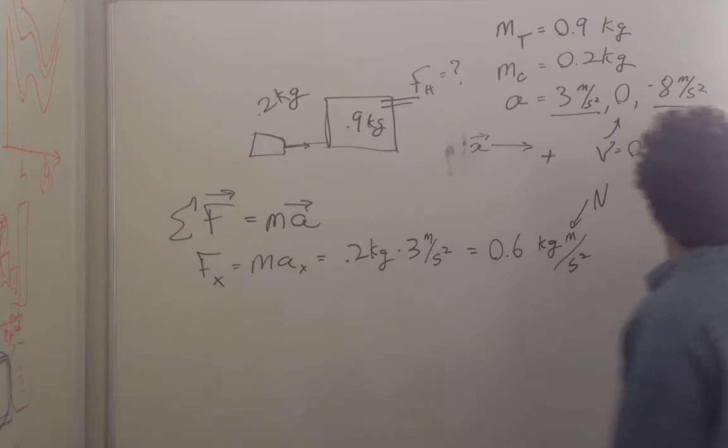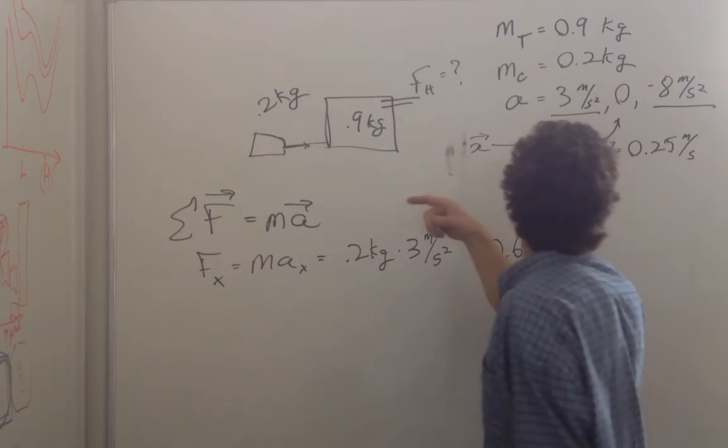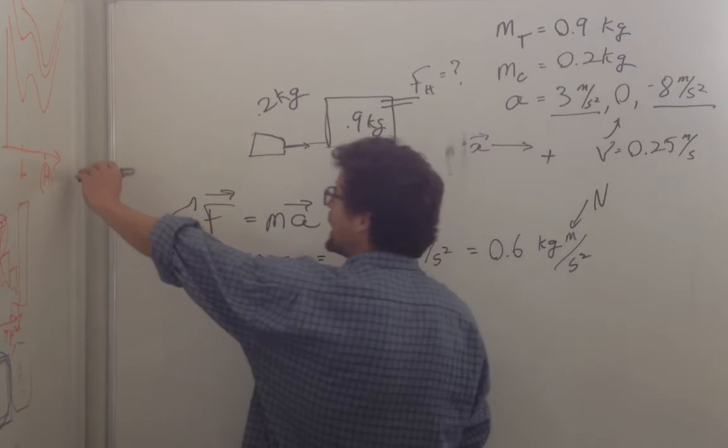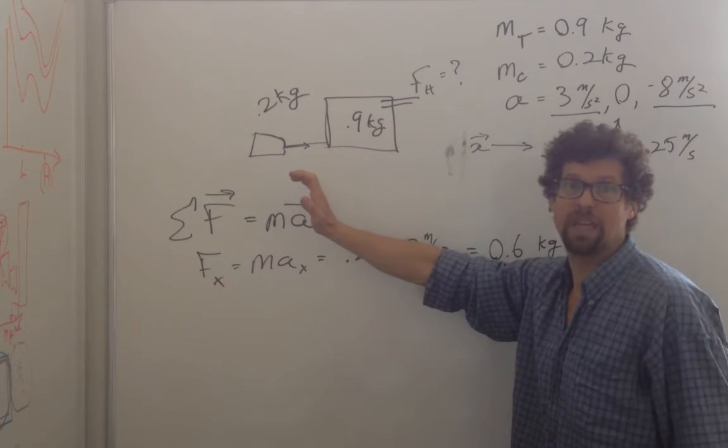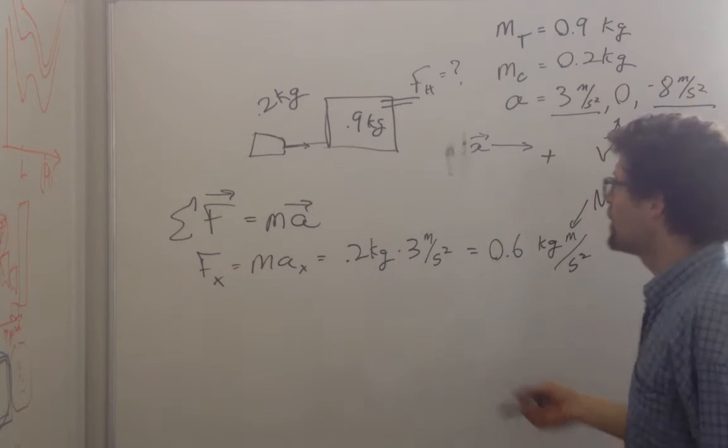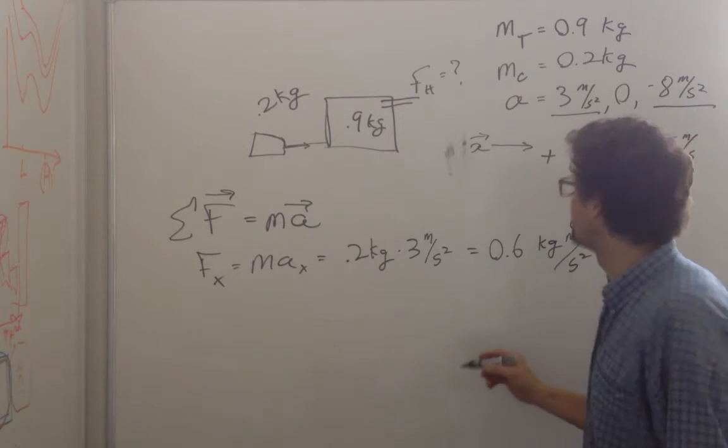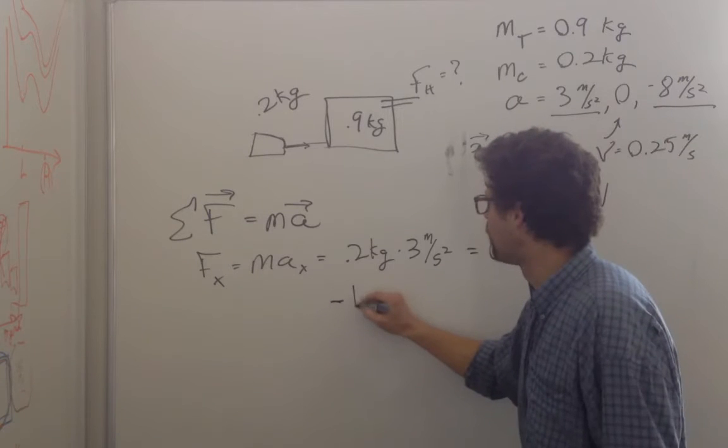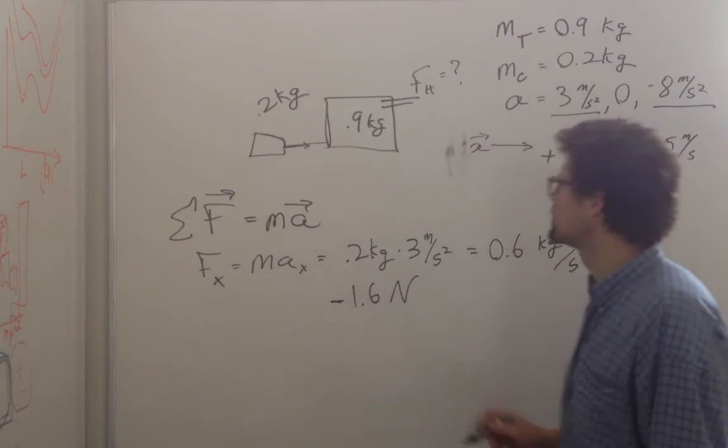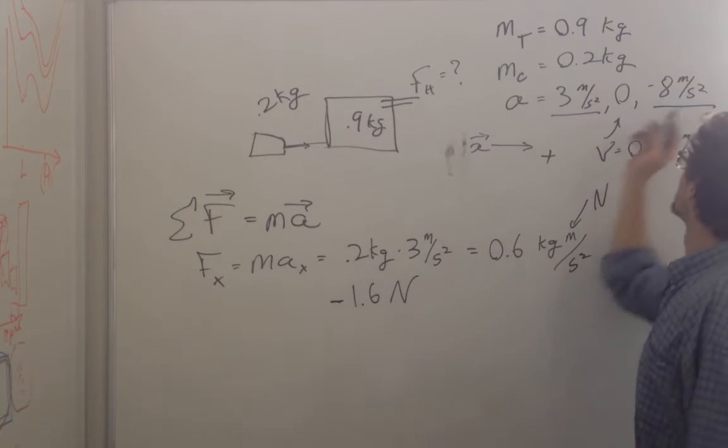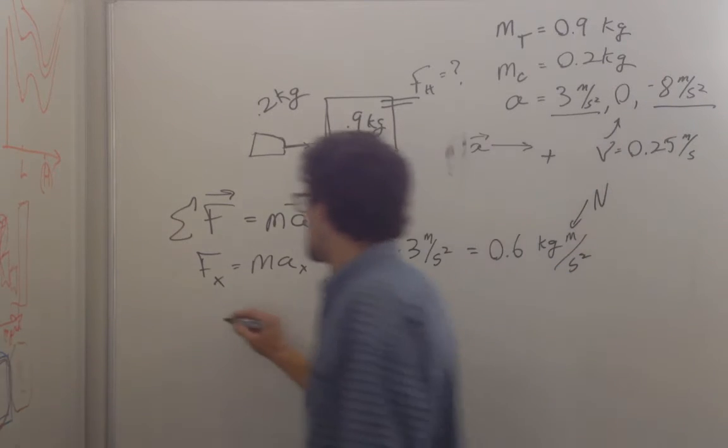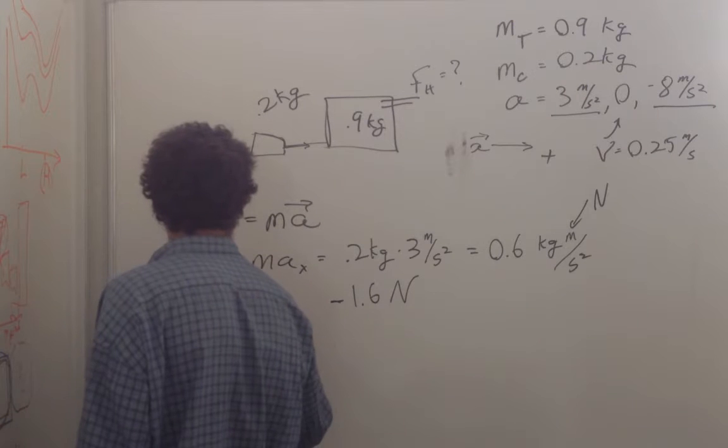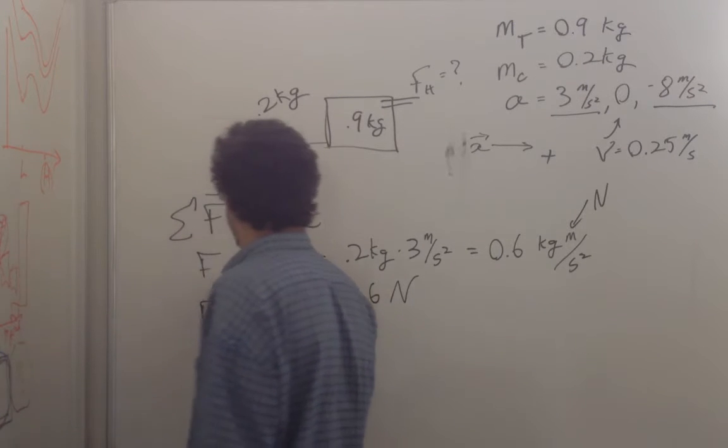And then you can do it for the same thing if the force is negative 8 meters per second squared. So it gets moving along and then there's a force in that direction to bring it to a stop. That's negative 8 meters per second squared. You multiply it by the 0.2 kilograms and you get a force of negative 1.6 Newtons. So that's the force at the end. This would be the initial force.